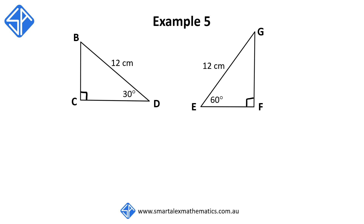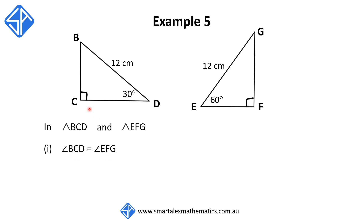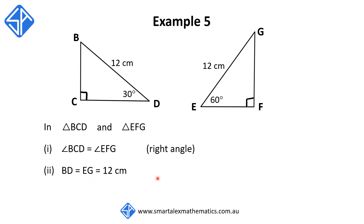For our last example, I've got another pair of right-angle triangles. But I want to work through this example specifically to show that just because you see a right angle, it doesn't mean you can conclude using the RHS test straight away. We begin with: in triangle BCD and triangle EFG. The first reason: angle BCD is equal to angle EFG — both right angles. The second reason: BD is equal to EG, equal to 12 centimeters — these are the hypotenuses, and it's given.